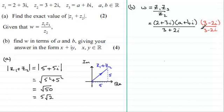So we multiply top and bottom by 3 minus 2i. I'll put that in brackets. So multiplying out the top I'm going to do the 2 plus 3i with the 3 minus 2i first and then multiply afterwards with the a plus bi. So we'll do 2 times 3 which is 6.